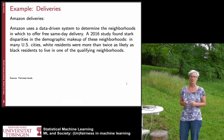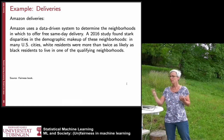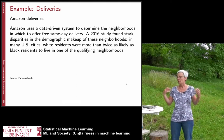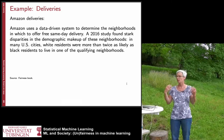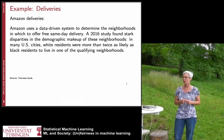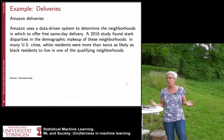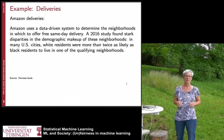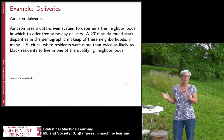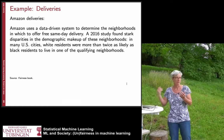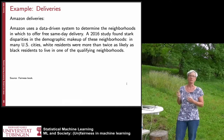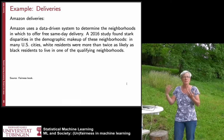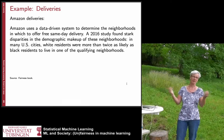Here are more examples where unfairness can arise in machine learning. Amazon used a data-driven system to determine neighborhoods for free same-day delivery. A 2016 study found stark disparities: in many US cities, white residents were more than twice as likely as black residents to live in qualifying neighborhoods. Amazon had some way to determine where to offer this service, and as it happened, it applied to white areas much more than black areas — which is a disaster, and maybe not what Amazon intended. It simply came out of the algorithm.